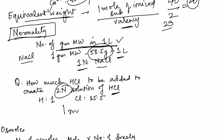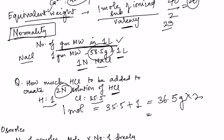One mole of HCl is 35.5 for chloride plus 1 for hydrogen, giving 36.5 grams. We have to double it for a 2N solution, so 73 grams of HCl added to 1 liter of solution will give a 2N solution of HCl.